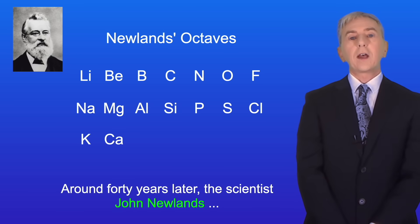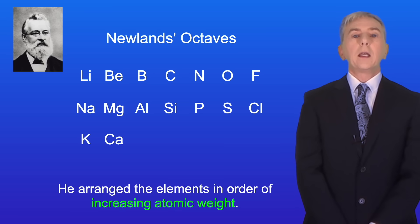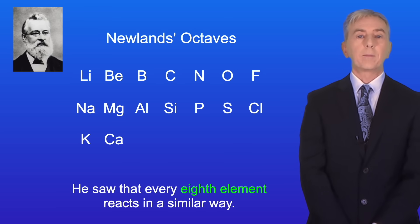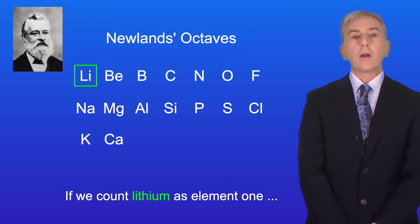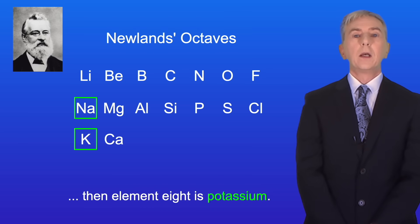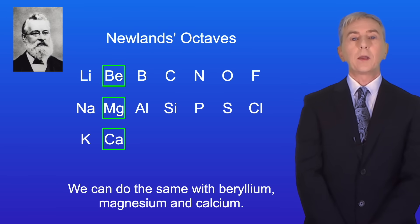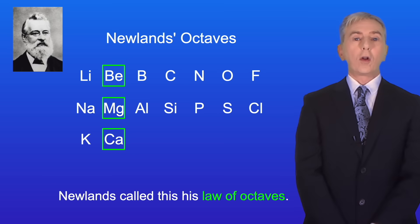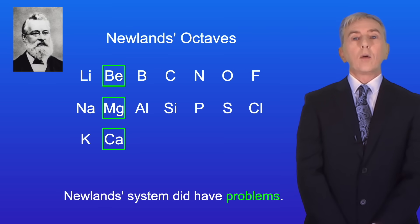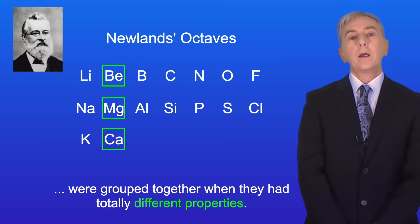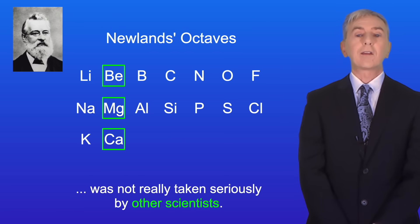Around 40 years later, the scientist John Newlands noticed something interesting. He arranged the elements in order of increasing atomic weight and saw that every eighth element reacts in a similar way. If we count lithium as element one, then element eight is sodium; counting sodium as element one, element eight is potassium. We can do the same with beryllium, magnesium and calcium, which also react in a similar way to each other. Newlands called this his law of octaves. However, by always sticking to the exact order of atomic weight, sometimes elements were grouped together when they had totally different properties, so Newlands' law of octaves was not really taken seriously by other scientists.